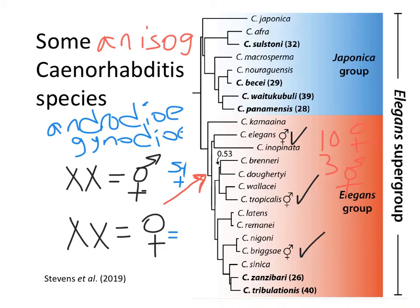This is the evolutionary principle of parsimony — the fewest number of changes necessary to explain a pattern is the most likely explanation. Occam's razor: the simplest explanation is the most likely one. So it's more likely that the ancestor was a female species, and that on the branches leading to each of the three hermaphrodite species, hermaphroditism evolved three separate times.